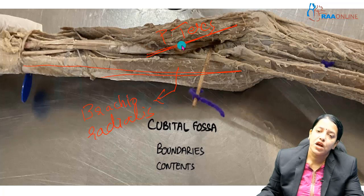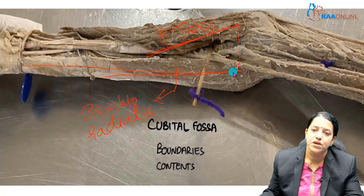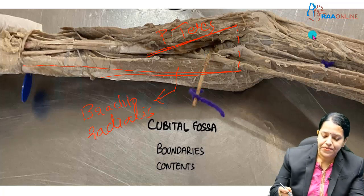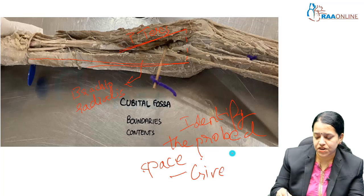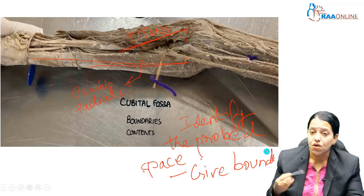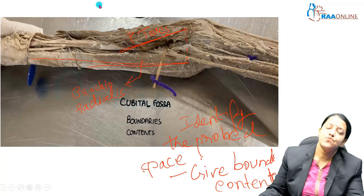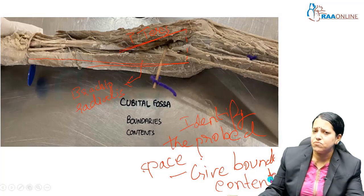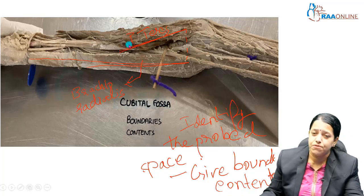These muscles form the boundaries of the two sides of the triangle, and the base of the triangle is drawn across the top. This is the triangular probed area — the probe is kept here. The question can be: identify the probed space and give its boundaries. Along with that, you can give the contents — boundaries and contents. This is the exact specimen that can be asked for spot identification in the cadaver, so it's very important.